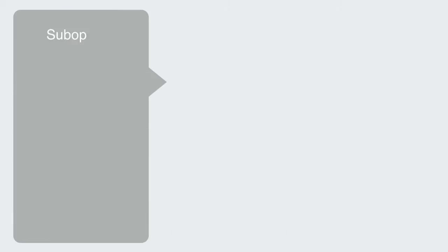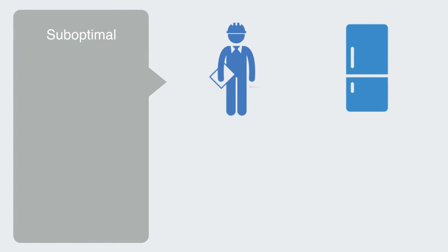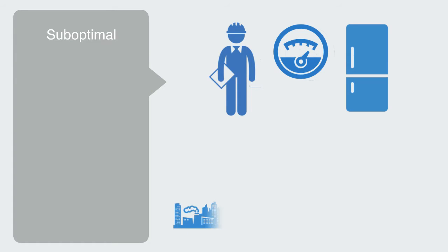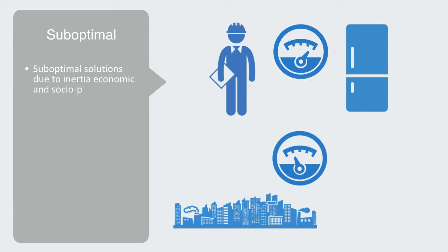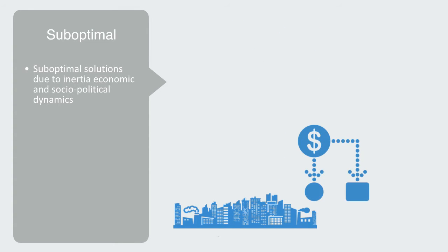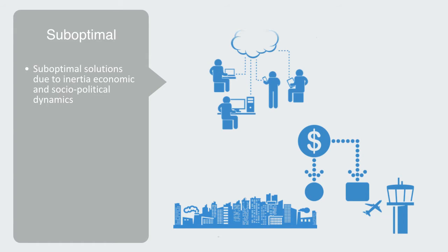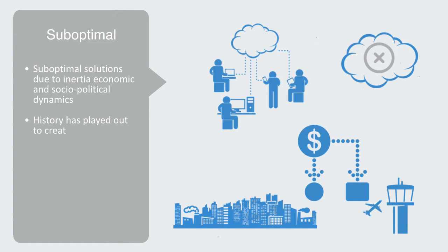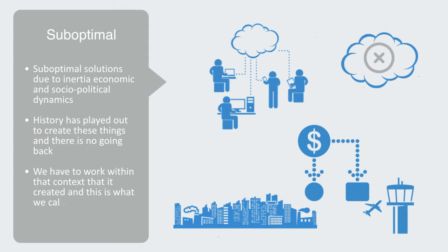We often think of engineering and technology as driven by efficiency, and this may be the case on the micro level where we can fully control the design and production process for a refrigerator. But on the macro scale, with self-organization, we often come to sub-optimal solutions due to inertia and economic and socio-political dynamics. These complex engineered systems typically involve large amounts of fixed capital and sunk costs. A city gets one chance to build its expressway out to the airport — it will be there for the next 50 years. History has played out and there is no going back. We have to work within that context, and this is what we call path dependency.